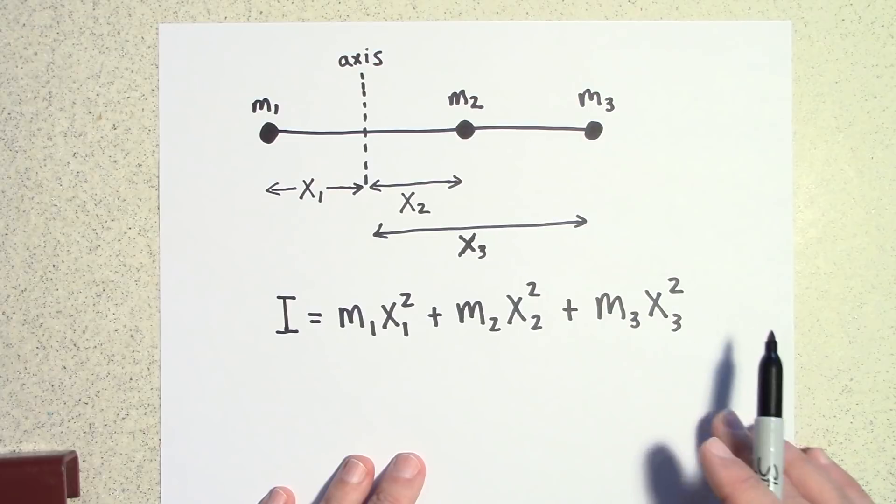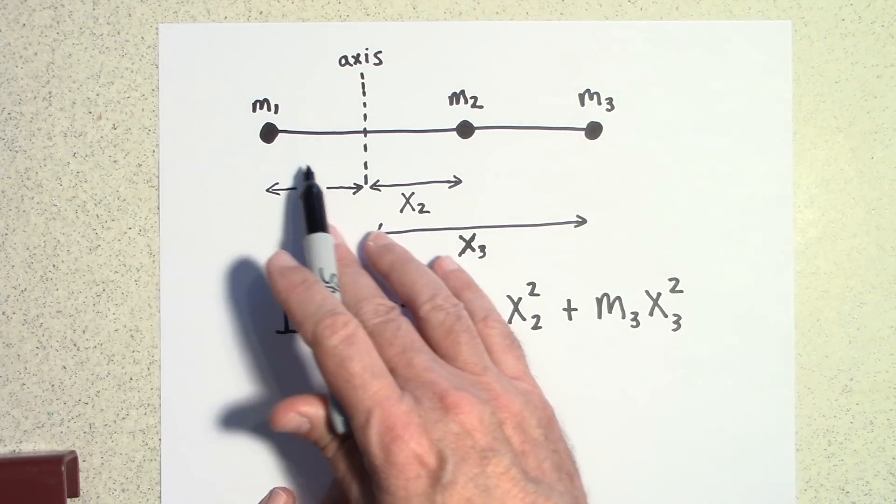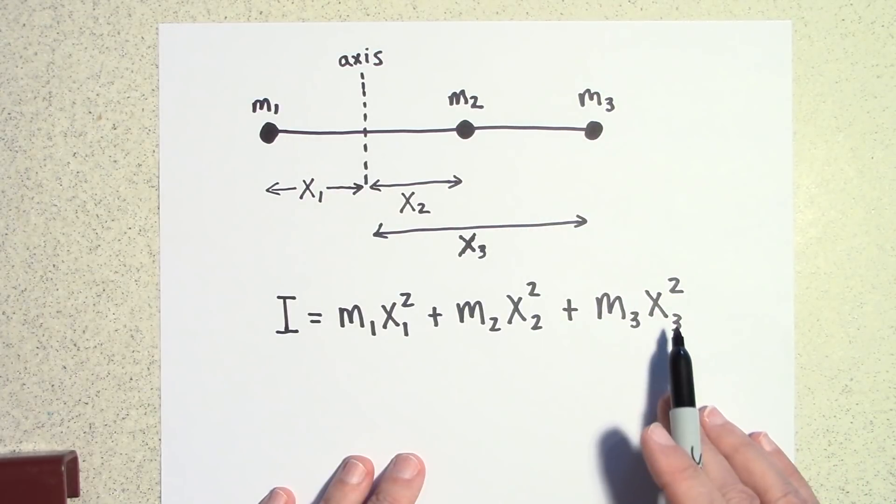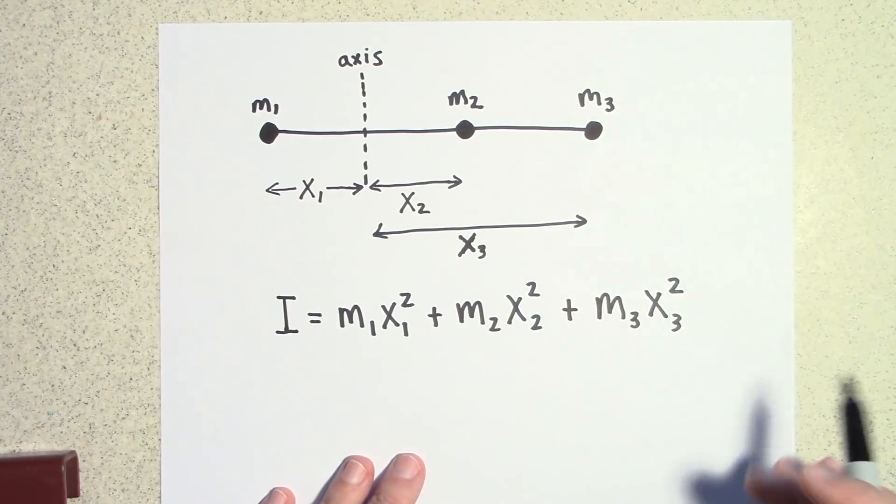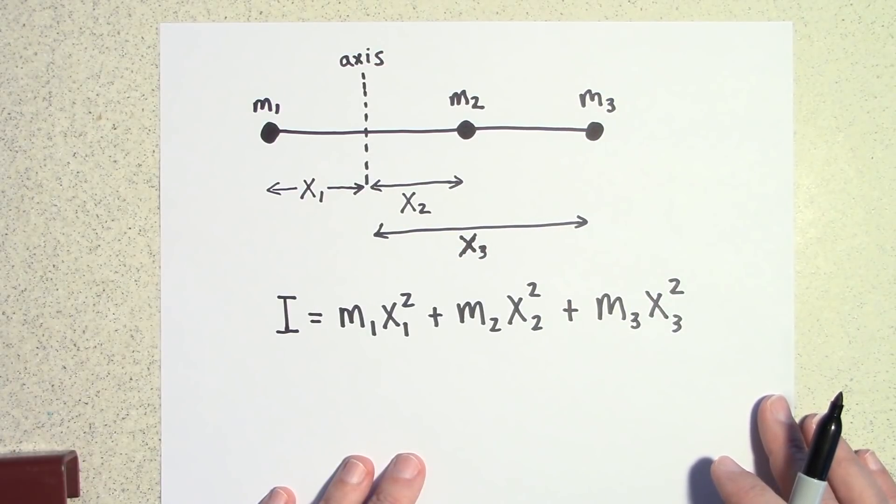So you just add those up. By the way, if the mass does, if the rod does have mass, then you just add one more term that you might get from a table of rotational inertia.